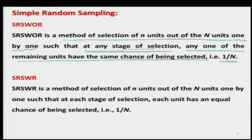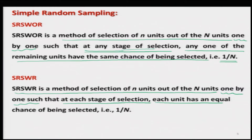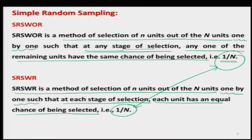The similar story applies to simple random sampling with replacement. SRSWR is a method of selecting small n sampling units out of a population of capital N units, drawn one by one such that at each stage of selection each unit has an equal chance of being selected, which is 1 upon capital N. In SRSWR there is no confusion that the probability remains the same, because at every stage once you draw the unit you replace it back, so the number of units in the population always remains capital N.